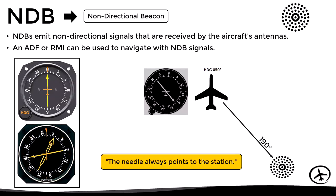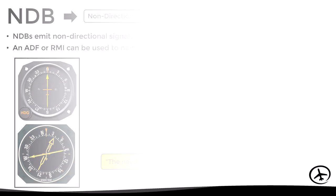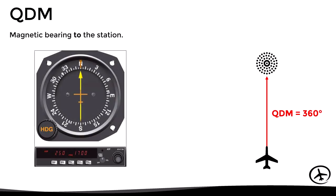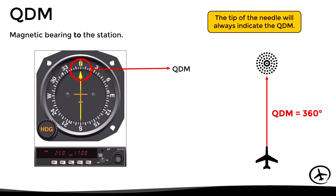With this in mind, there are two bearings that can be used as reference to navigate with an NDB. The first one is the QDM, which is the magnetic bearing to the station. In other words, this is the magnetic track that the aircraft would need to fly in order to proceed directly to the station. Considering the way in which an ADF or RMI work, the tip of the needle will always indicate the QDM, which in this particular example is 360.